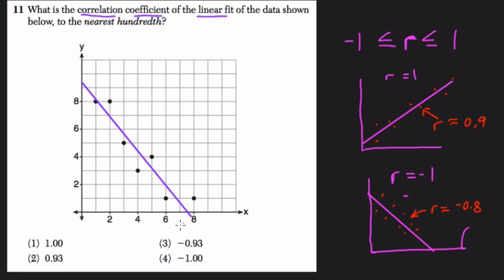So you can see that in this question, we're going to cancel out choices 1 and 4 because those represent perfect lines. We don't have that right here. The points are scattered around the line. And because this line has a negative slope, the slope's about what? Down 1, 2, 3, 4, 5, and then over 1, 2, 3, 4.